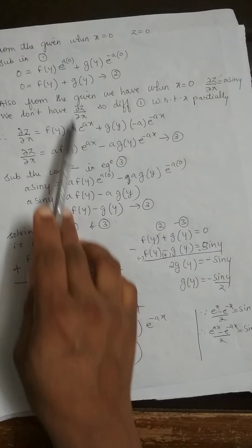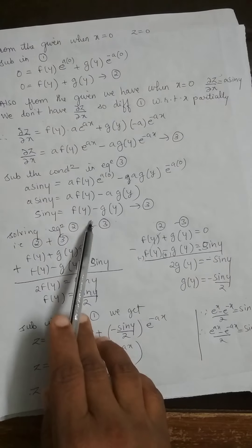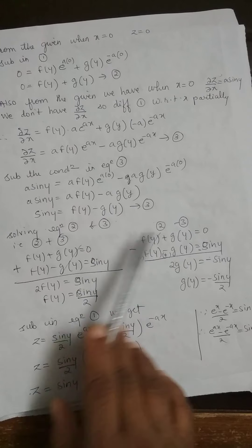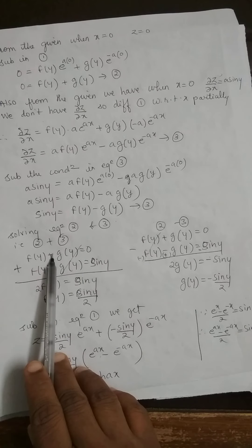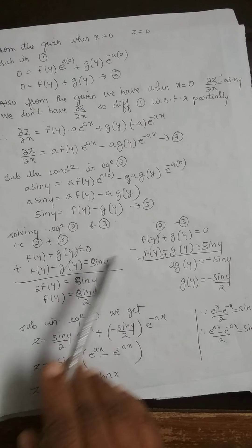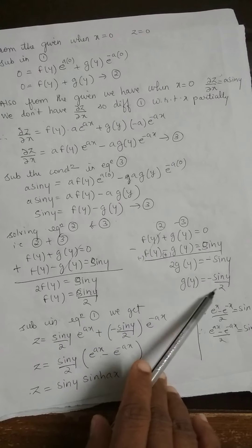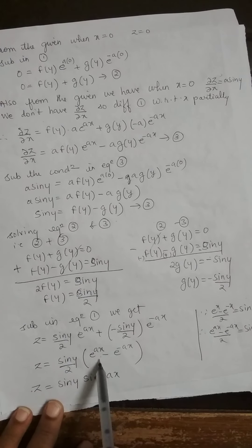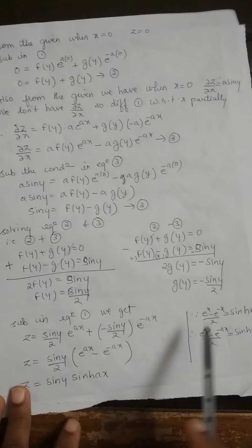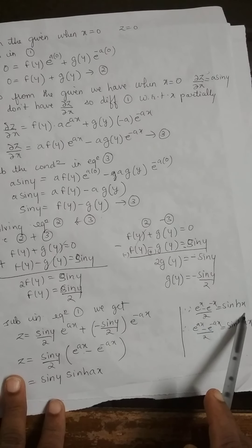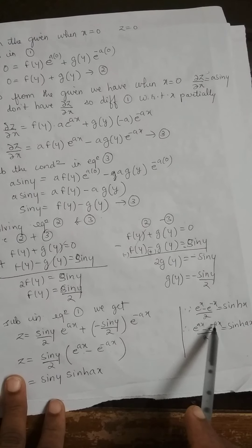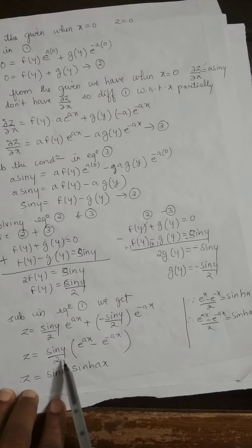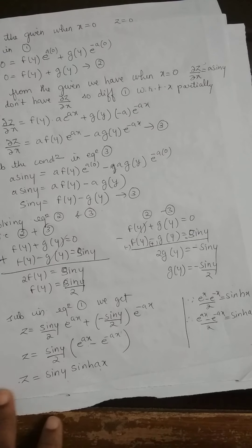Substituting x = 0 and ∂z/∂x = a·sin(y) gives f(y) − g(y) = sin(y). Now we have two expressions: f(y) + g(y) = 0 and f(y) − g(y) = sin(y). Solving these simultaneously gives f(y) = sin(y)/2 and g(y) = −sin(y)/2. Substituting back into equation 1 and taking sin(y)/2 common: the solution is z = sin(y)·sinh(ax), since (eᵃˣ − e⁻ᵃˣ)/2 = sinh(ax).